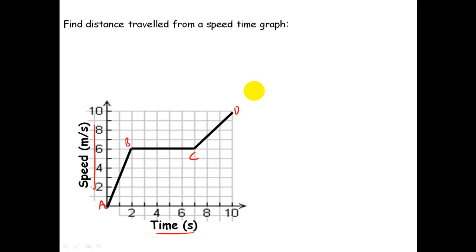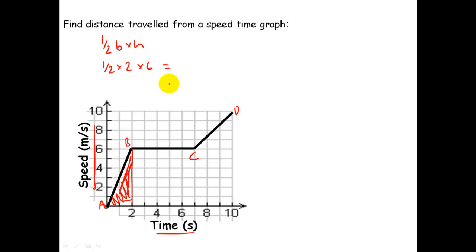To calculate the distance travelled from A to B, I'll find the area of the triangle. Using the formula: half base multiplied by height. Substituting in: half times the base (2) times the height (6). A half times 2 is 1, times 6 is 6 metres. So 6 metres is the distance travelled in the first 2 seconds. Mark for the formula, mark for the answer, mark for the unit.